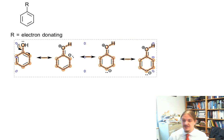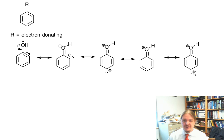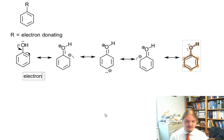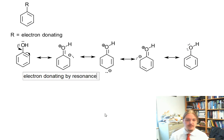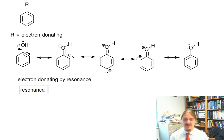I'm going to end up drawing five resonance structures. Whenever I do this part, drawing out these resonance structures feels like it takes forever, and it pretty much does — so I appreciate your patience. I'll put lone pairs back on the oxygen, a lone pair here, and a negative charge here. The OH group in phenol is electron donating by resonance, and this has the benefit of increasing the electron density on the ring.